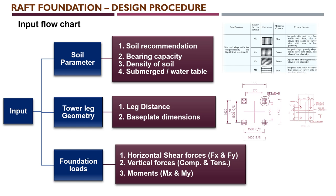For tower leg geometry, we need the leg distance and base plate dimensions, as shown in the picture on the right side. ML is silt and CL is clay — there are various soil categories. The leg dimensions are generally extracted from the structure model or drawings. There are four legs with base plates connected to anchor bolts. The distance between these legs is needed as input, and the base plate dimension is required to fix the pedestal or column sizes. The anchor bolt spacing also needs to be extracted from the structure model.